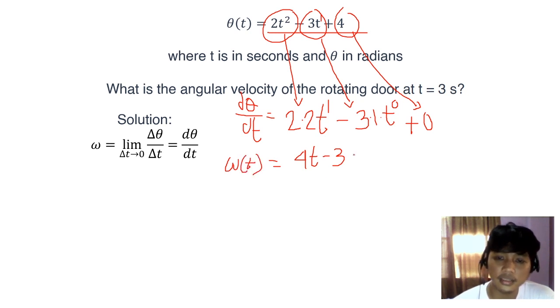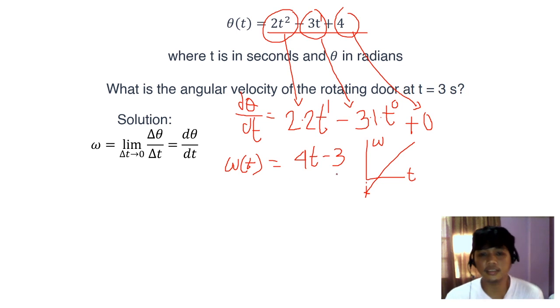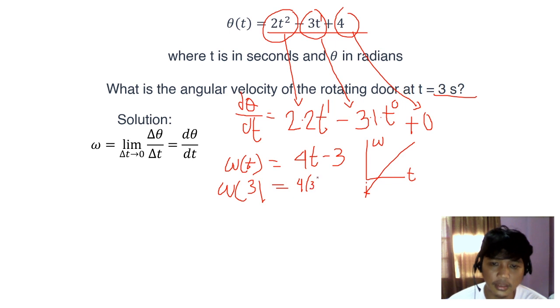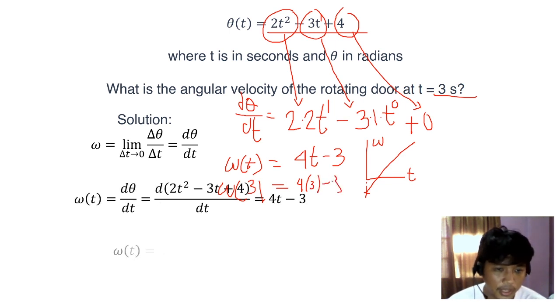This tells us, it's actually a linear graph. Omega as a function of time? I think it starts at negative 3. It goes up. But this graph tells us what omega is at certain times. At 3 seconds, we'll substitute 3. We get 4 times 3. Actually, I made a mistake in the PowerPoint. 9 radians per second. That's our answer.